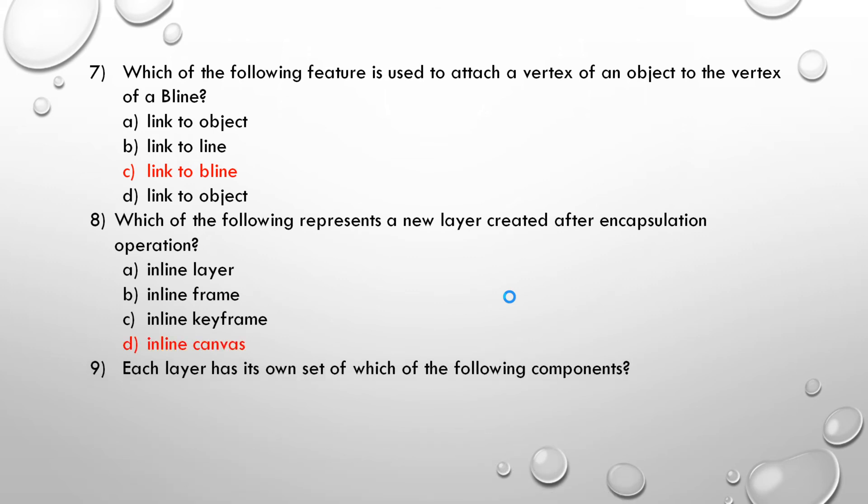Question number 9. Each layer has its own set of which of the following component? A. Frame. B. Keyframe. C. Parameters. D. Panels. Many students get confused and they mark wrong answer. Correct answer is parameters.